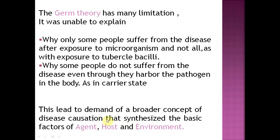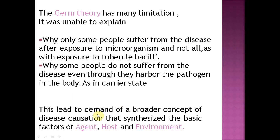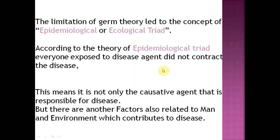This led to the formation of the second concept: the epidemiological triad. Tuberculosis could not be explained by germ theory and Koch's postulates because even with the presence of microbes, not all people produce symptoms or disease. So germ theory was found insufficient and the next theory — the epidemiological or ecological triad — came into existence, requiring an interaction of agent, environment, and host.